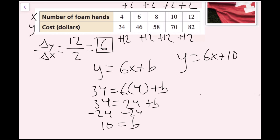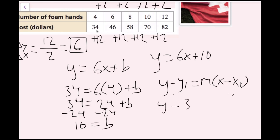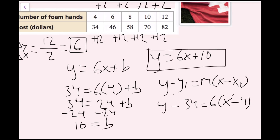If you wanted to use point-slope form instead, that's totally fine. You'd write y minus y1 equals m times (x minus x1), with slope 6 and point (4, 34): y minus 34 equals 6 times (x minus 4). When you simplify this, you end up with the same result. We've successfully gotten our function, and now we're done.